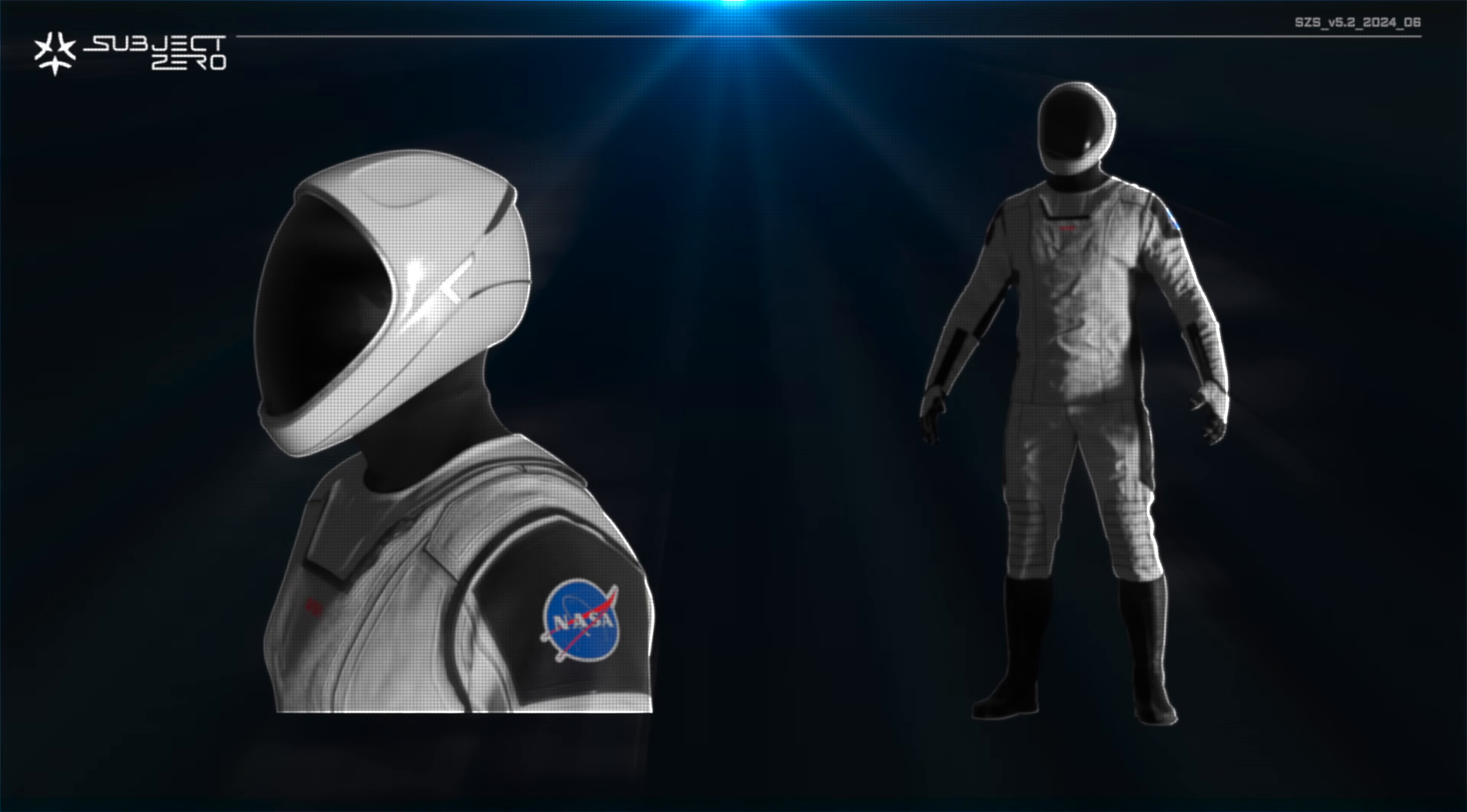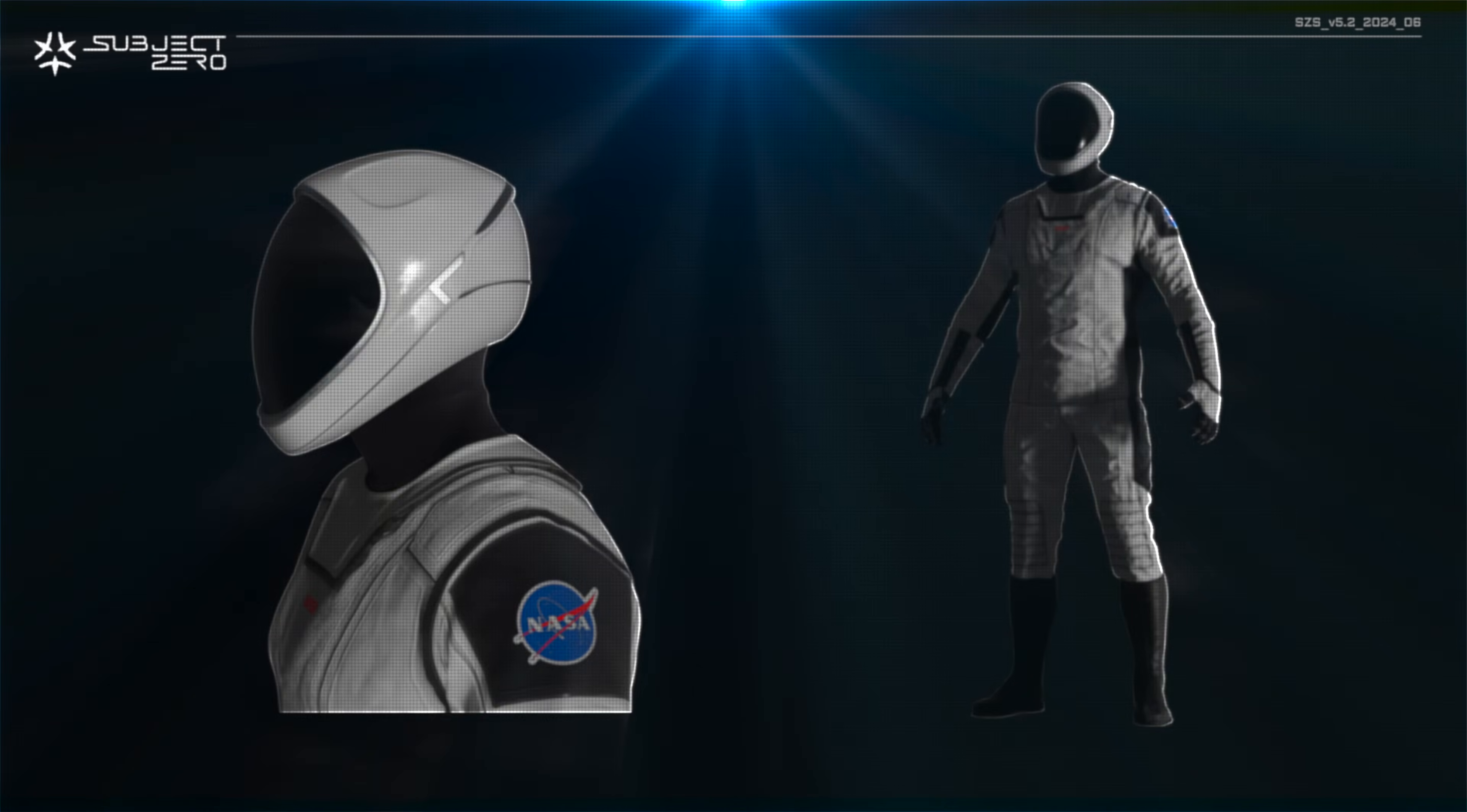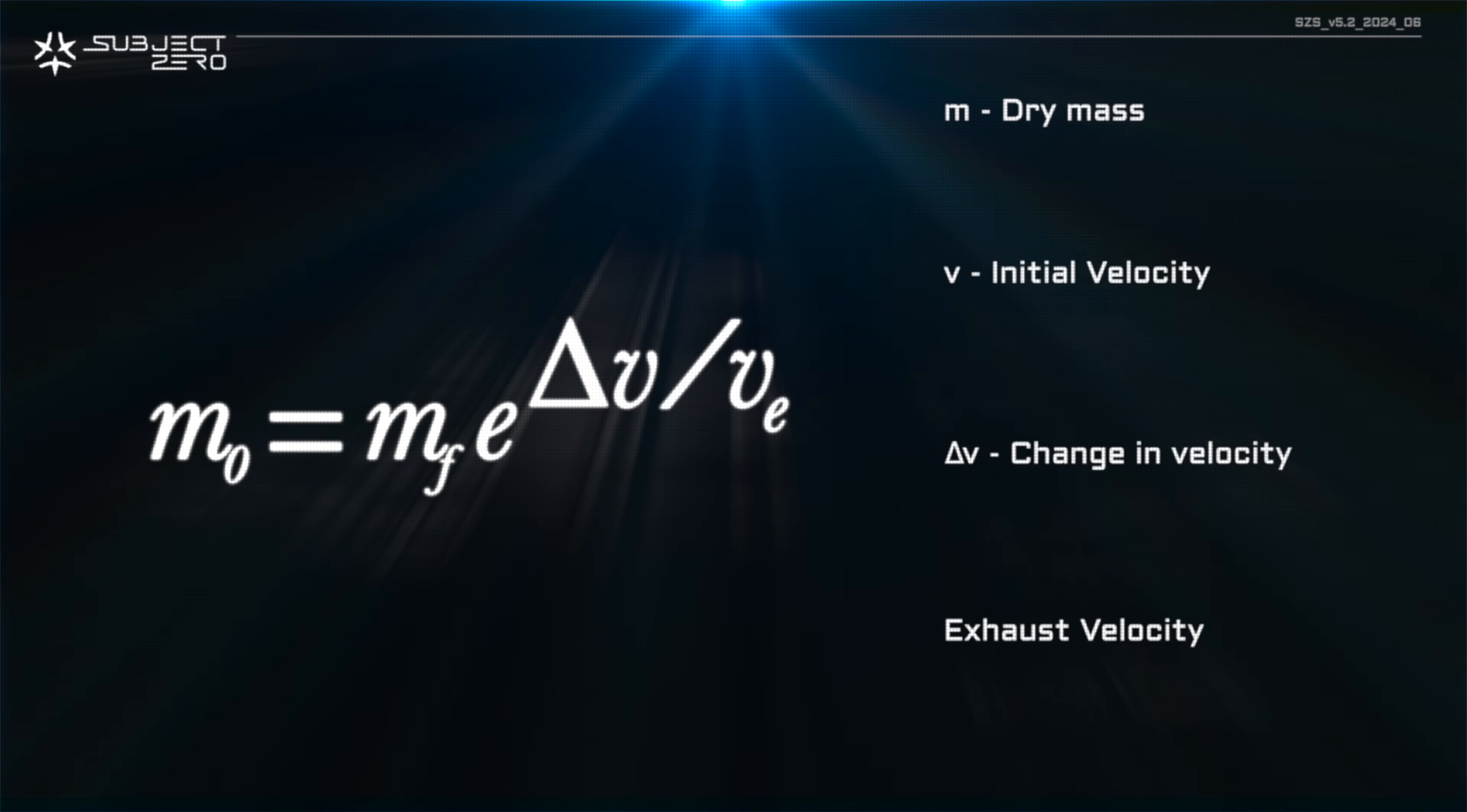But believe it or not, choosing between humans or robots is the least of our problems. Using the rocket equation, we can determine the fuel ratio necessary to achieve that speed.